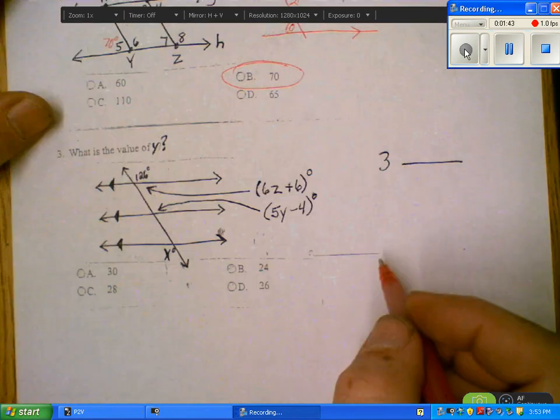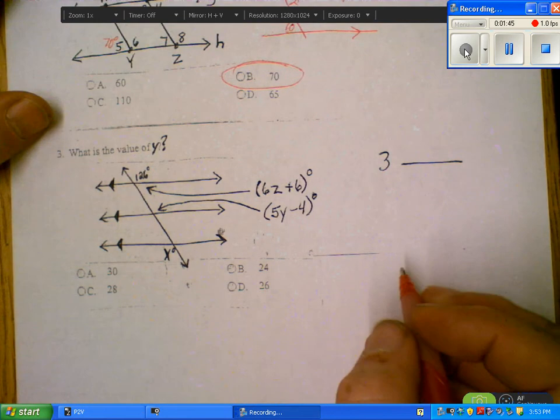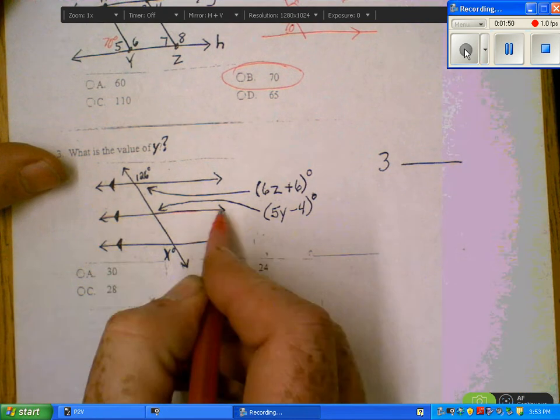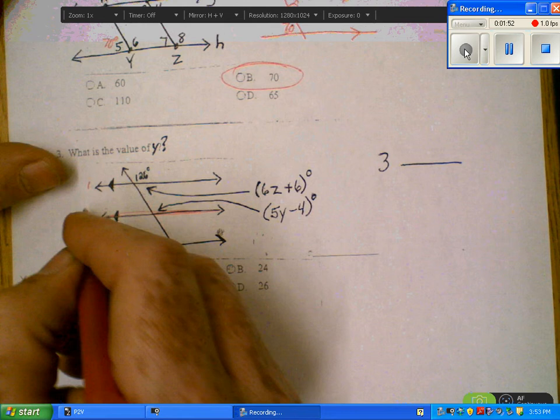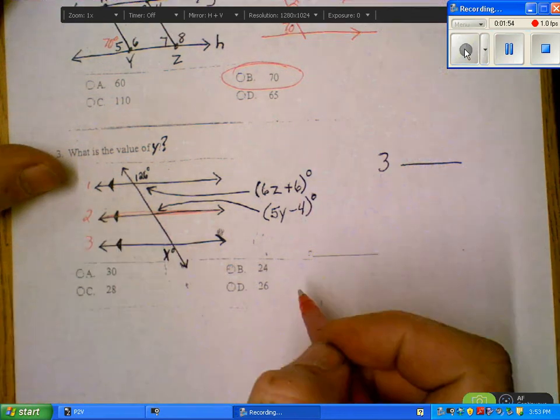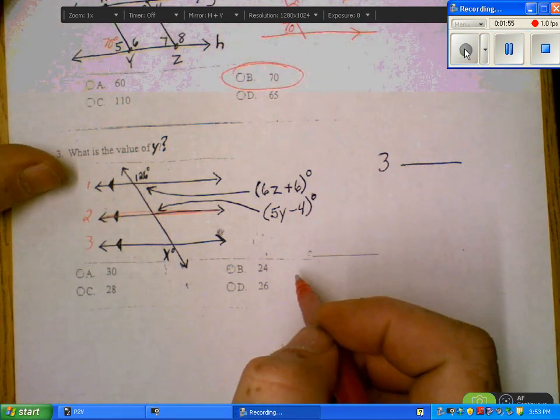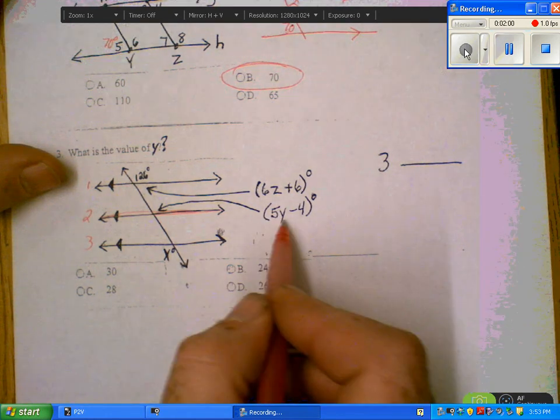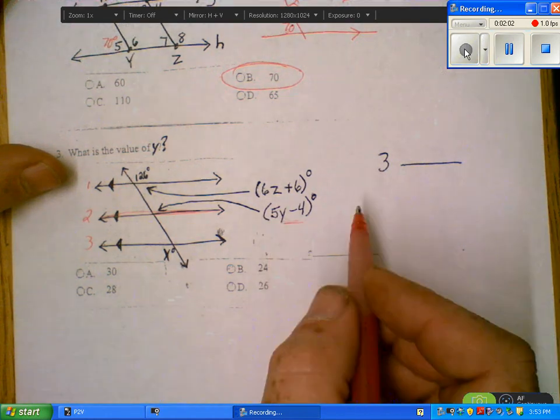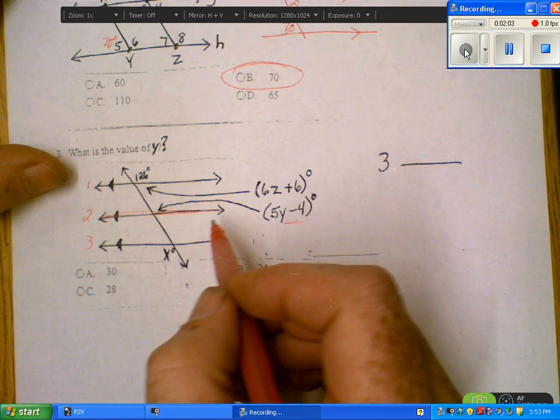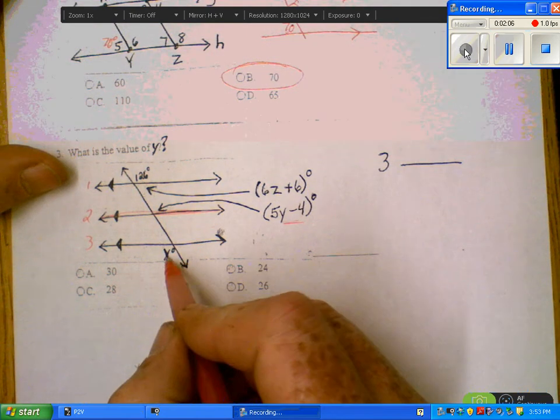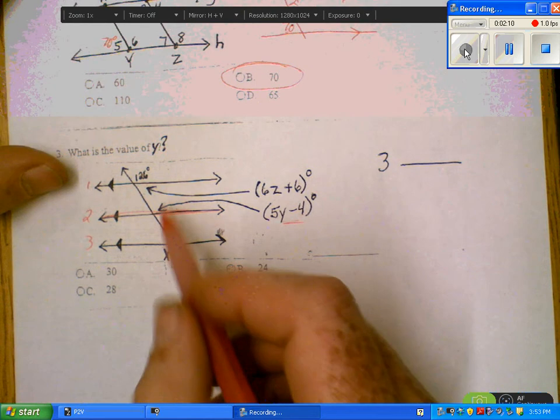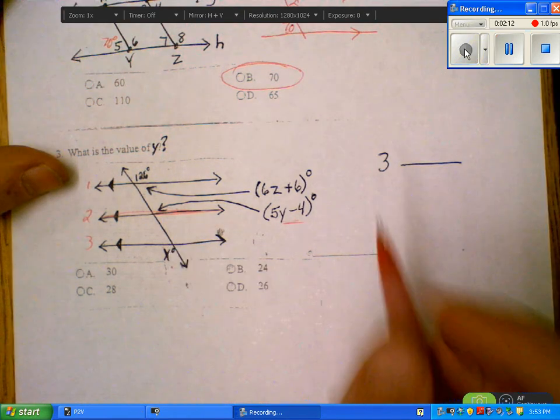Number 3, they want us to find the value of Y. I'm looking here. I'm going to do this line, this one, two, and three. I know what this angle is because they're going to be the alternate exterior angles. That's not going to help us because you'd have the same thing in there.